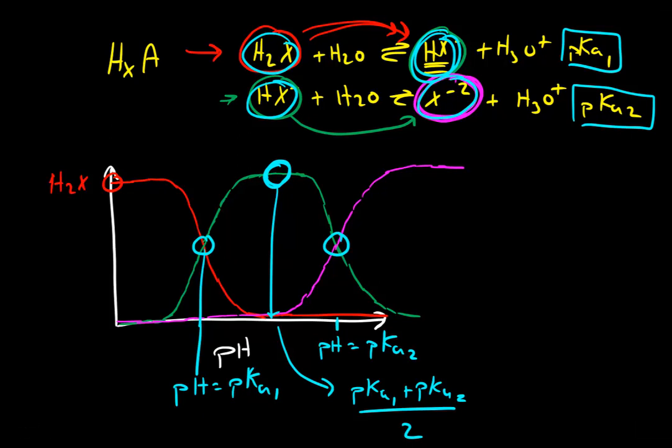So if we were to put some numbers to this, let's say pKa1 were to be equal to 3 and pKa2 equals 7. So the pH right here would be 3. That's when we are 50% diprotic, 50% monoprotic. The pH right here would be 7. That's our second pKa. And this intermediate pH where we've converted exactly all of our H2X to HX, this is going to have a pH of 3 plus 7 over 2. So the average of these two will be 5.